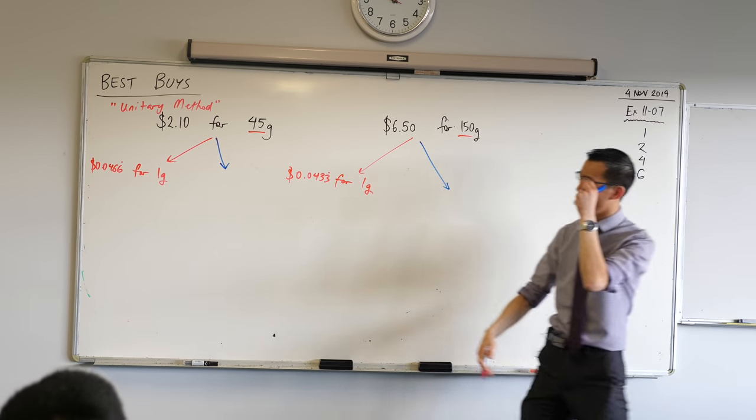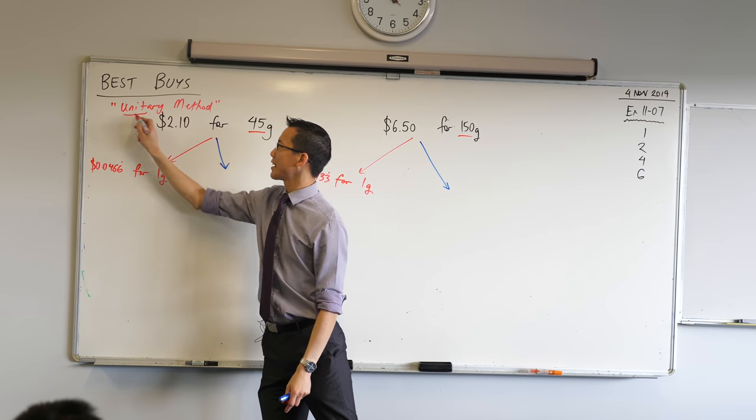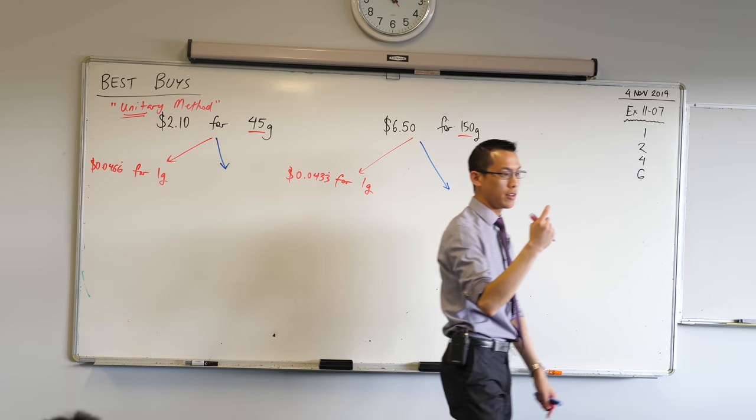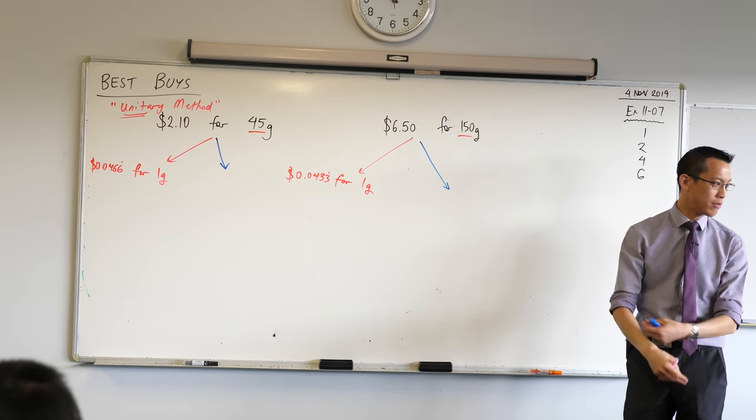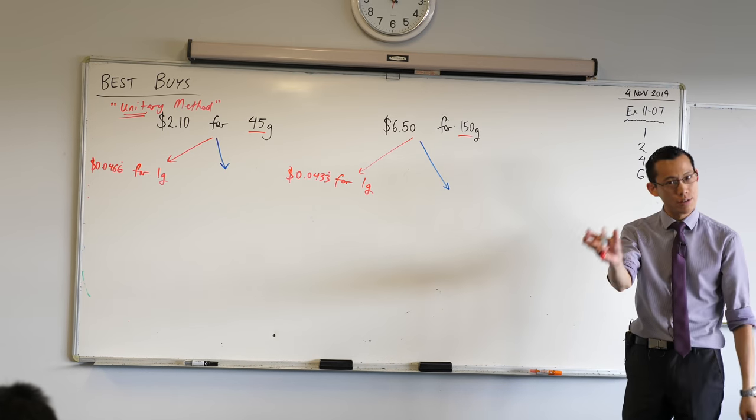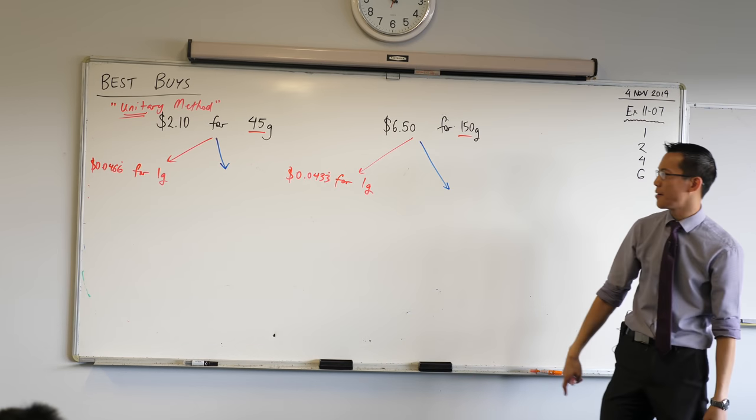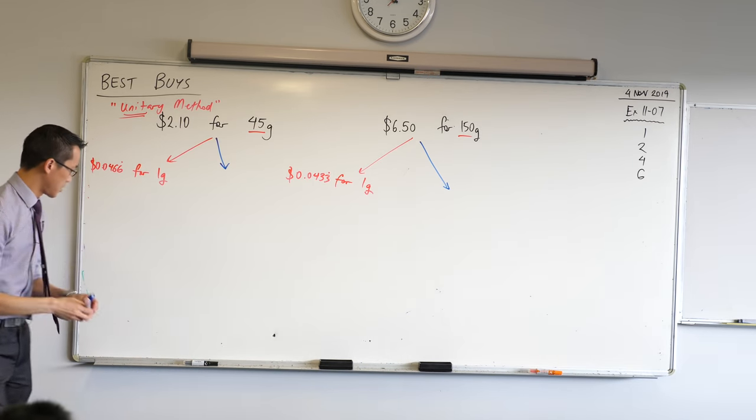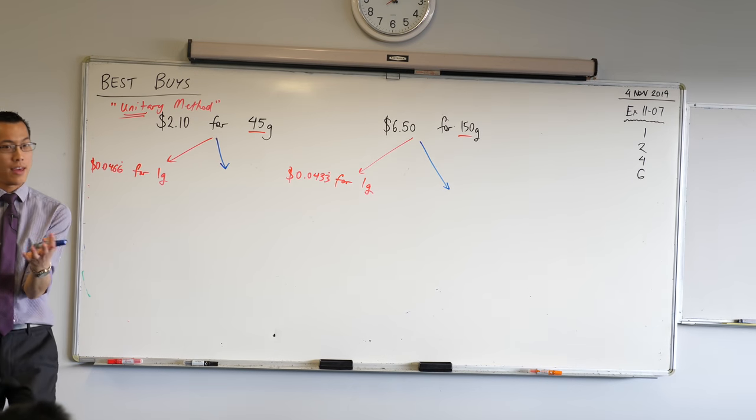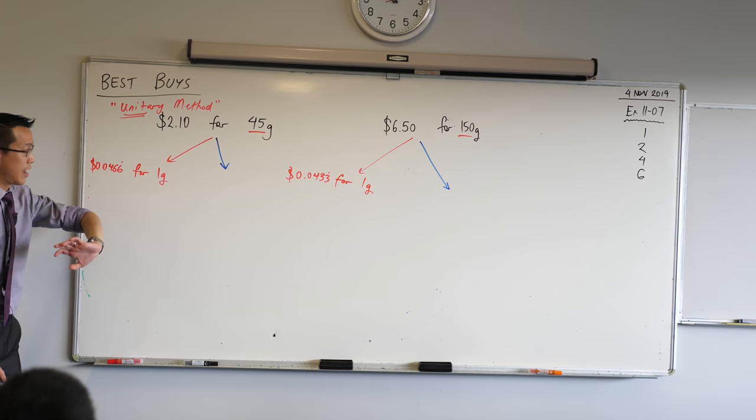So why do we call it the unitary method? What you're trying to get is the cost of one unit. In this case, it was a gram. It might have been a kilogram, or how many donuts you get. The unit changes depending on what you're buying. There's the unit. There's the unit. Now, there's another way to do this. The whole idea was to be able to compare them on the same terms. One gram, one gram.